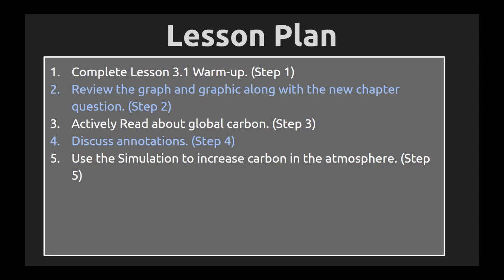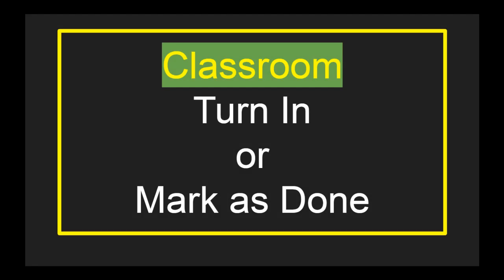You actively read about global carbon, then discuss those annotations that you would have made with peers. Then you use the simulation to try to increase the amount of carbon dioxide in the atmosphere as much as you can. When you finish, mark that as done. And that is 3.1.